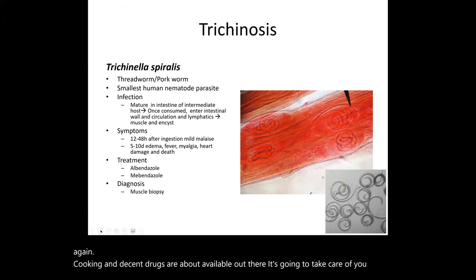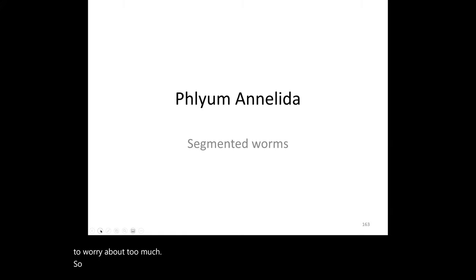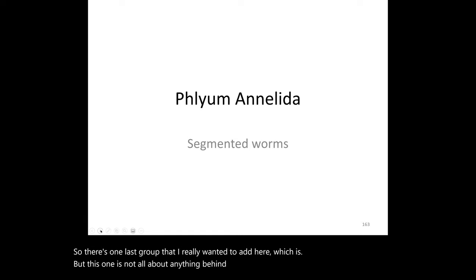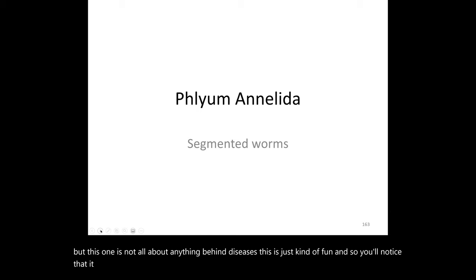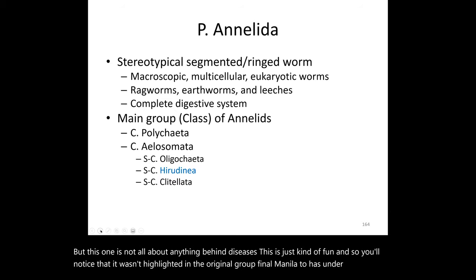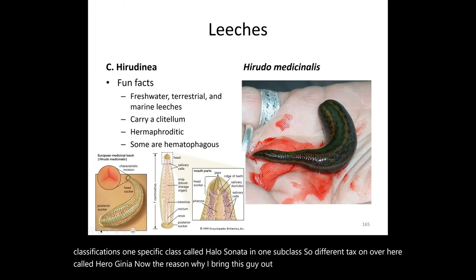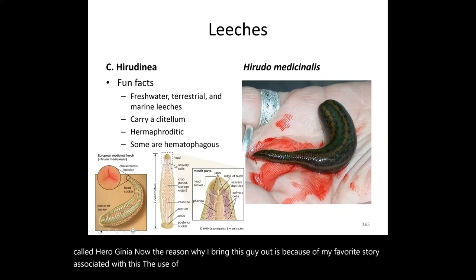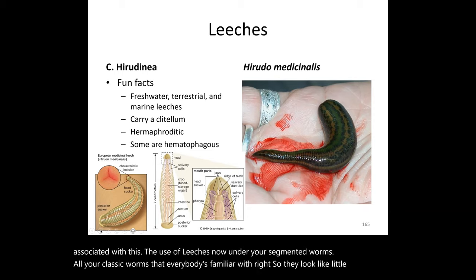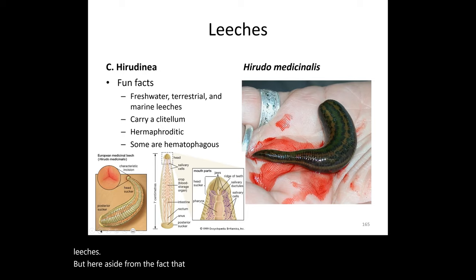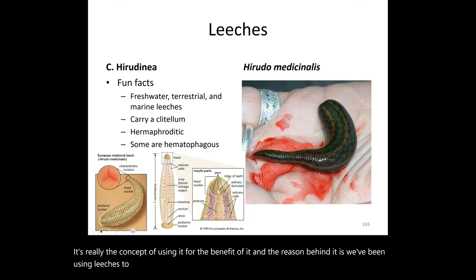Now, one last group to add here: phylum Annelida, which isn't really about diseases — it's just interesting. Under its subclassifications, there is the class Oligochaeta and a subclass Hirudinea. The reason to bring this up is the fascinating use of leeches. Under segmented worms, leeches look like classic worms. Besides consuming blood, there's real benefit to using them medicinally, and we've been using leeches to treat humans for a very long time.